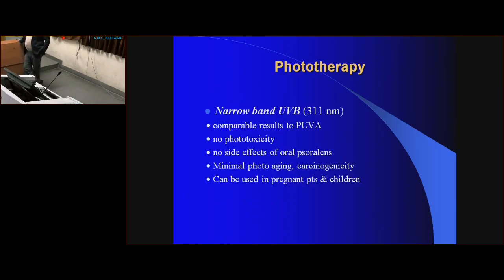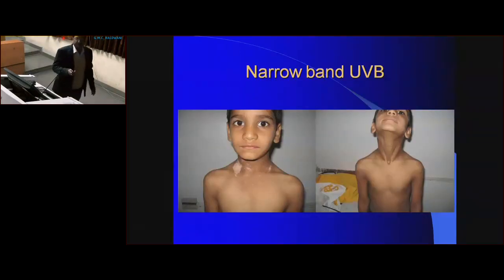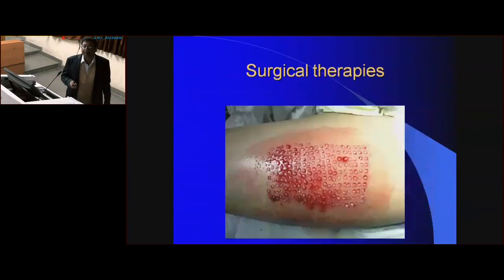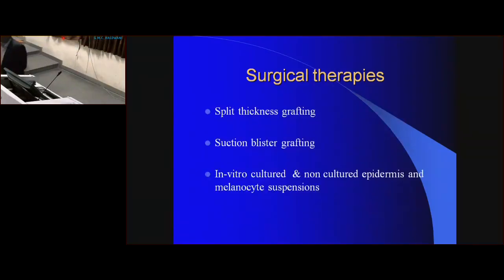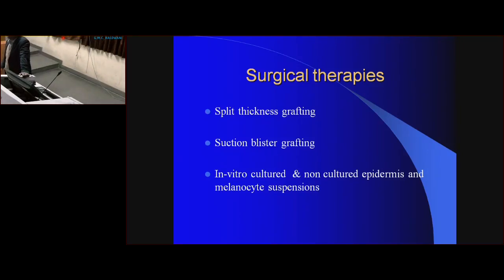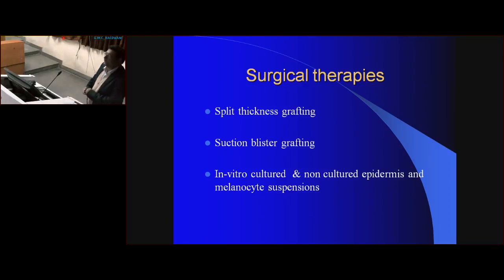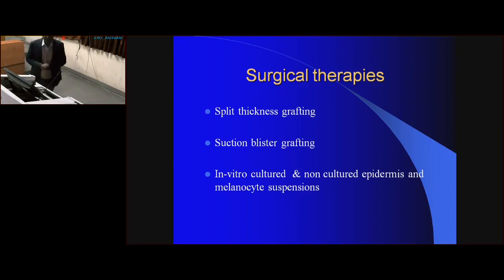In phototherapy, narrowband UVB is used. Surgical therapies include split-thickness skin grafting, non-cultured epidermal and melanocyte transplantation. These are the common modalities for treatment. You should know at least the medical part and the phototherapy and photochemotherapy used for treatment of vitiligo.